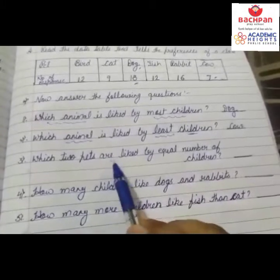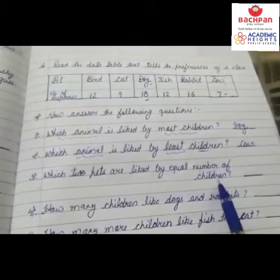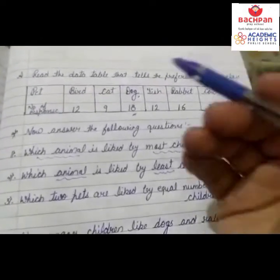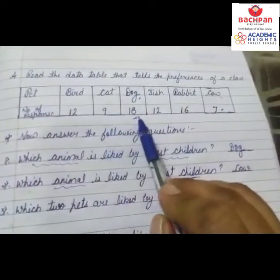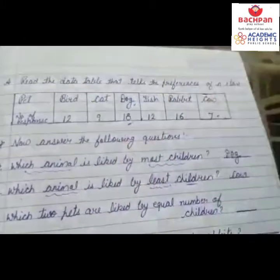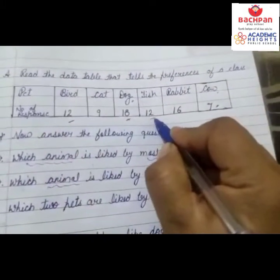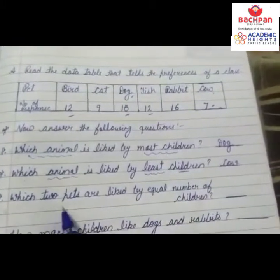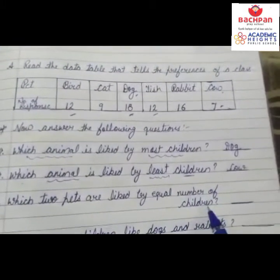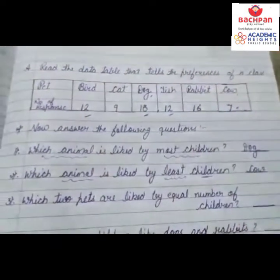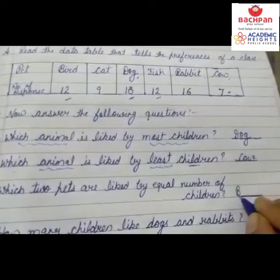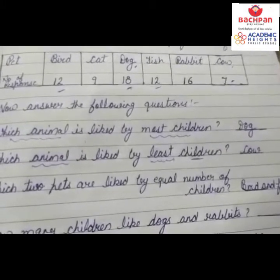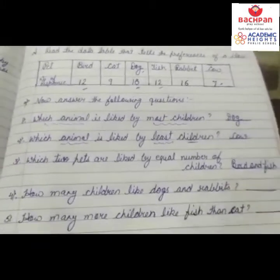Which two pets are liked by the equal number of children? Bird and fish — both have 12. Right here: bird and fish.